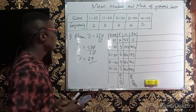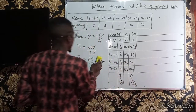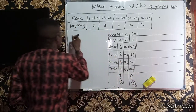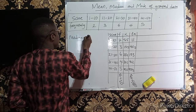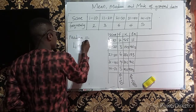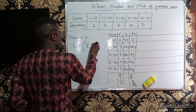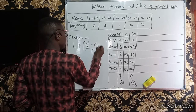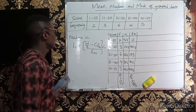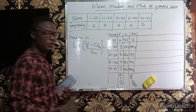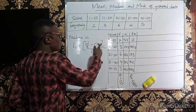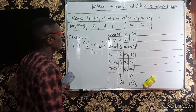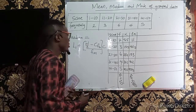Having got the mean, let us go for the median. The formula for the median of grouped data is: median = L1 + [(n/2 − cfb) / fm] × c. Here, n/2 is half the sum of frequencies, cfb is the cumulative frequency before the median class, fm is the frequency of the median class, and c is the class size or class width.